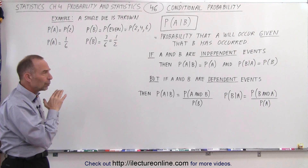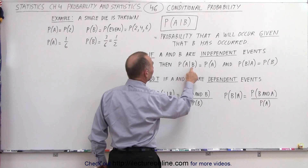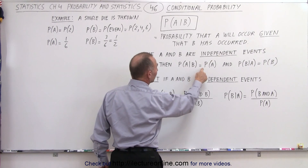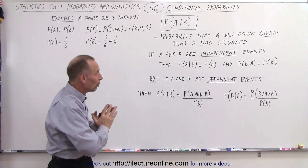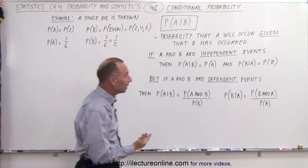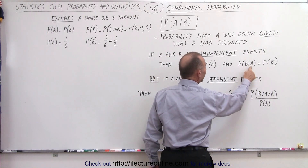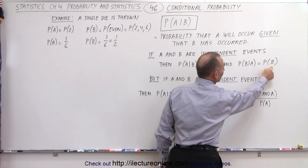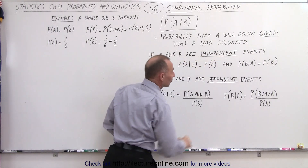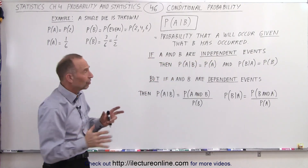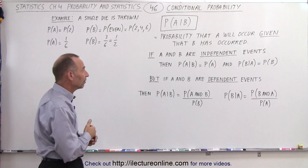If we're dealing with independent events, we can say that the probability that A will occur given that B has occurred is simply the probability of A, because there's no relationship between B and A. Likewise, the probability that B will occur given that A has occurred is simply equal to the probability of B. There's no dependency if they are independent events, so we don't typically use this concept for independent events.